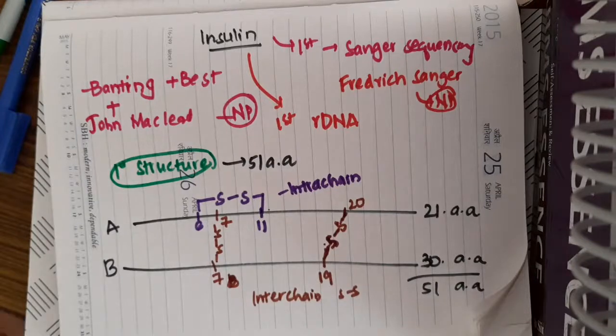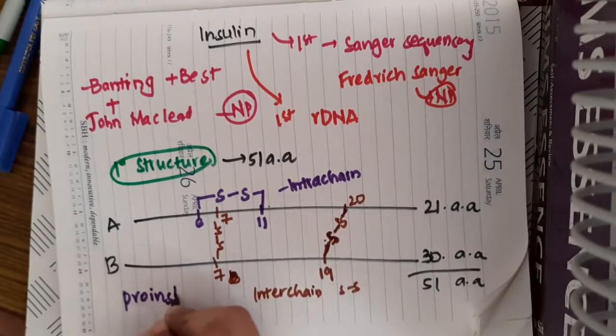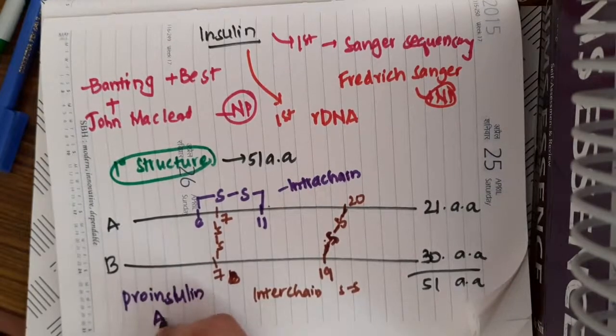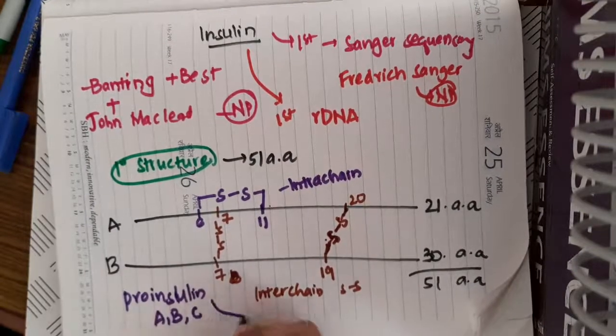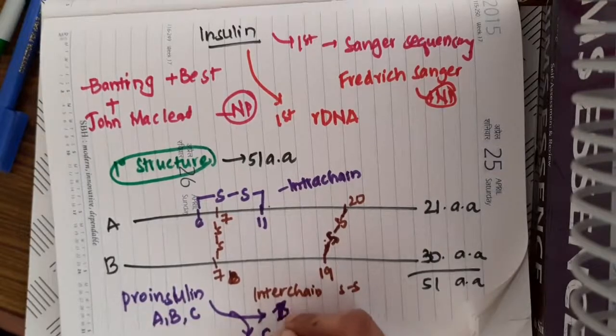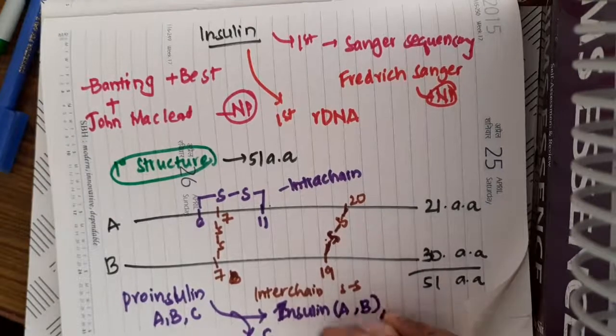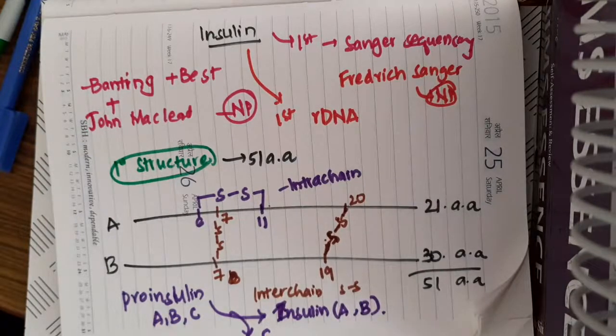During its synthesis, we have pro-insulin which is synthesized, which has three chains: A, B, and C chains. It loses its C chain and forms the mature human insulin, which contains only A and B chains.